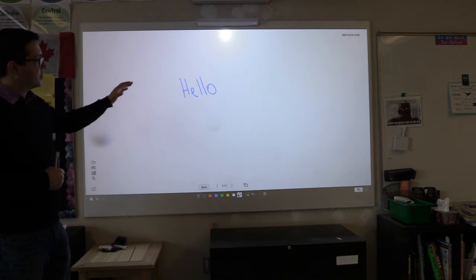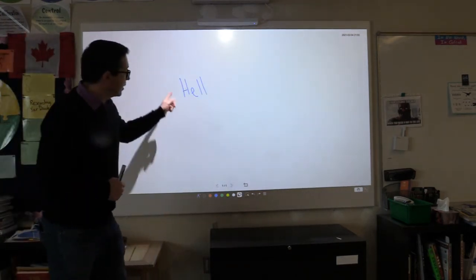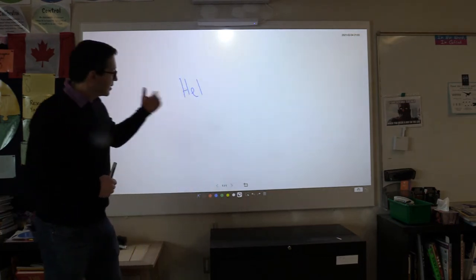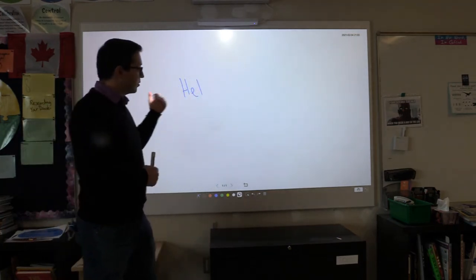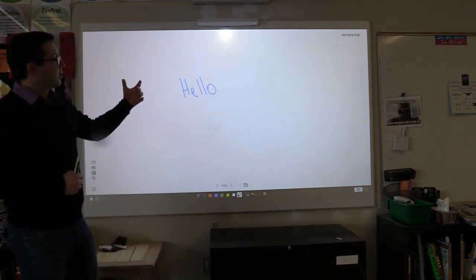If I want to remove writing from the board, I can hit the undo button and it will undo my writing step by step. If I undo too far, I can redo and add the writing back in. I can also use the trash can.